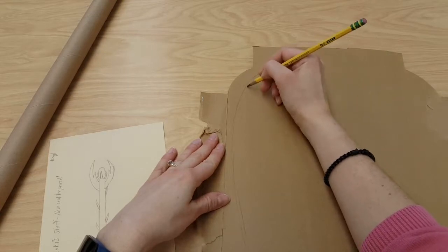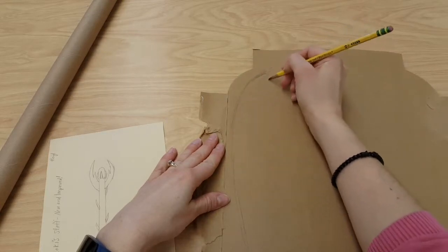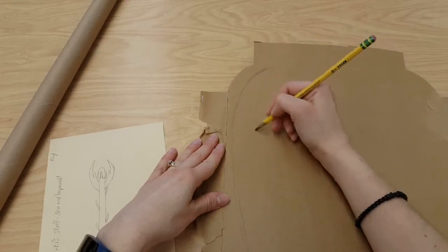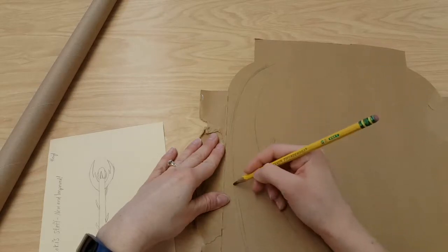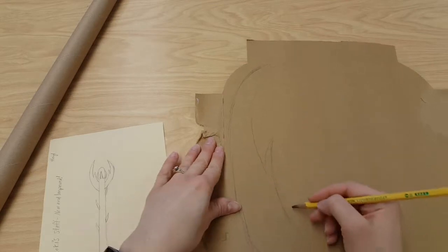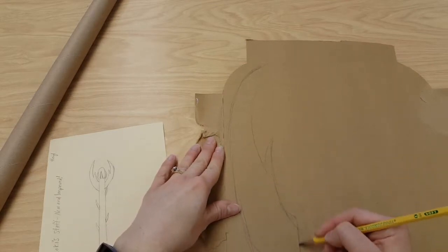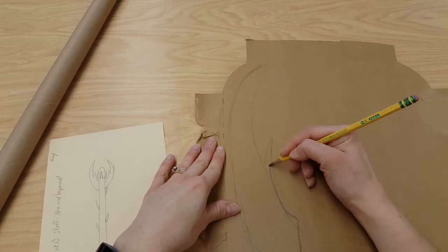Don't worry if you have little lines that get in the wrong spot because all this is going to get painted eventually. This end will have to be round. That has to go against the staff.